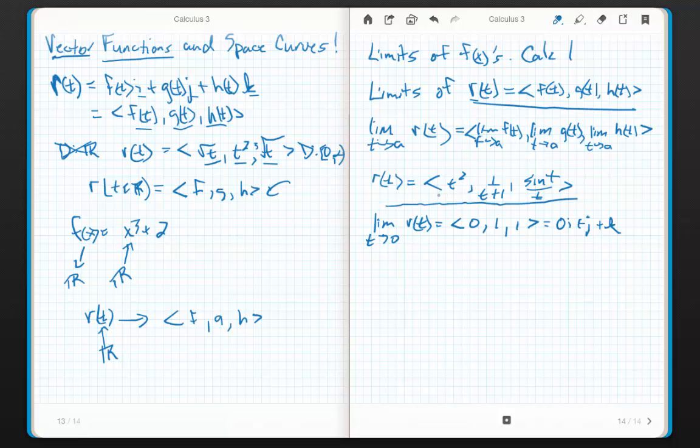Which just means this vector function, which can change. Now, you've got to think of these things as being dynamic with different values of t, right? If I take the limit as t goes to one of r of t, then this guy is going to be, just plug it in, I get one, one half, and sine one. Whatever sine one is. We know it's somewhere in there. Somewhere between zero and one, right?